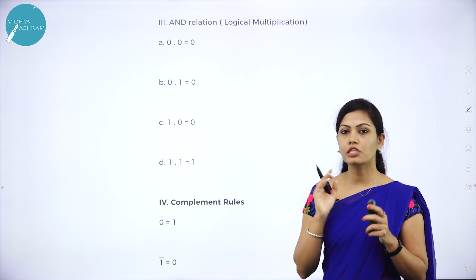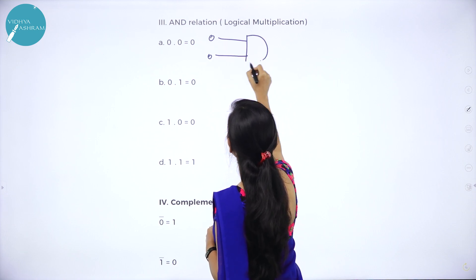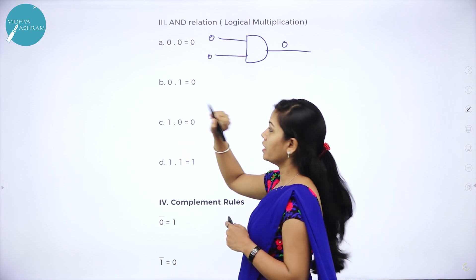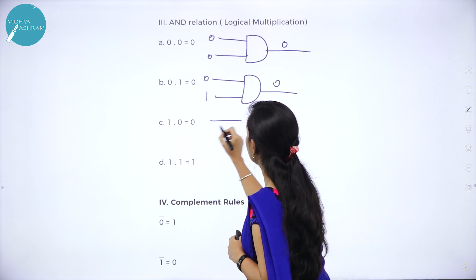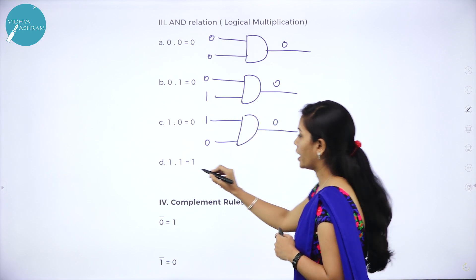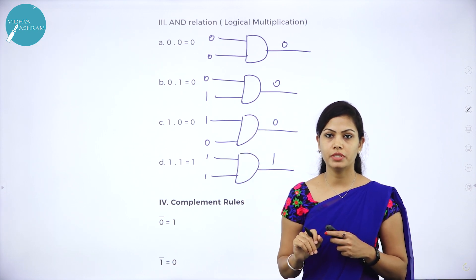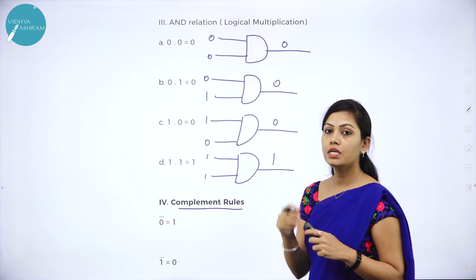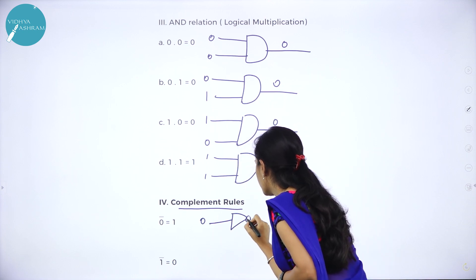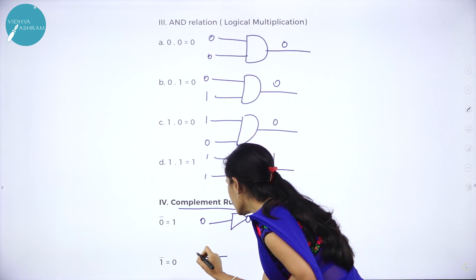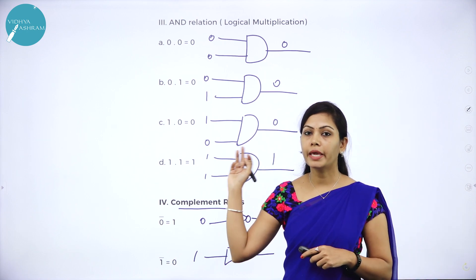Next we have the AND relation, that is logical multiplication. 0 dot 0 is equal to 0. Logical symbol for 0 dot 0 for AND relation is 0. Next, 0 dot 1 is 0. And 1 dot 0 is 0, and 1 dot 1 is 1. This is about the AND relation. Next postulate is complement rules: 0 complement is equal to 1 and 1 complement is equal to 0. This is called as complement rules. These are the important Boolean postulates.